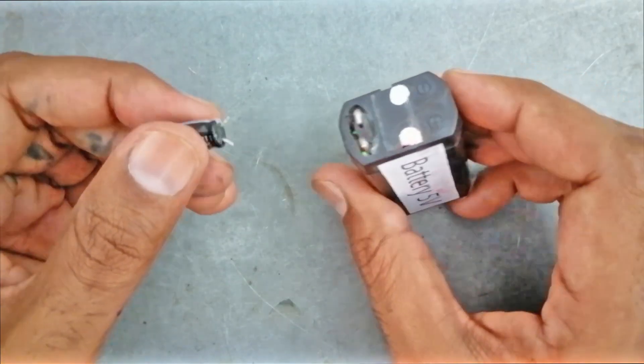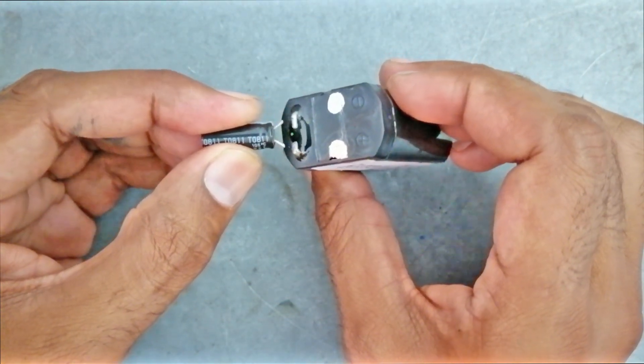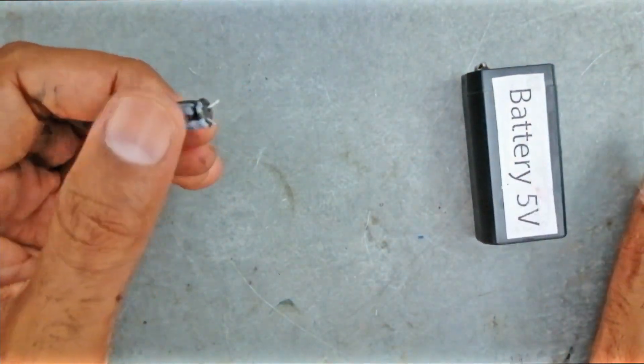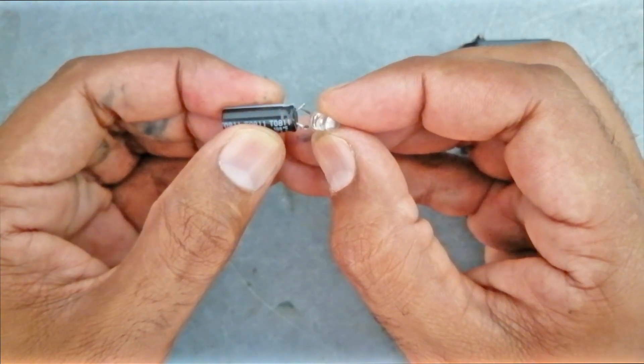Let's attach our capacitor with our 5V battery for a second. Let's separate them. After that we will attach it with our LED bulb again. Experience what happened. Let's attach it.